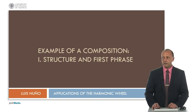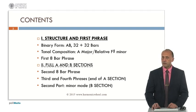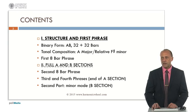This presentation has two parts. In this first part, we will define the structure of the composition, which is a binary form. That means that it has two sections, A and B, or two parts. Each of them will have thirty-two bars. This is a tonal composition, so the first section will be composed in A major and the B section in its relative key, F sharp minor.